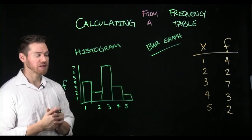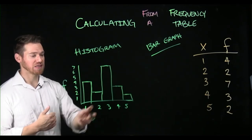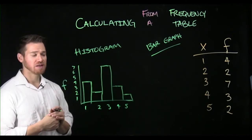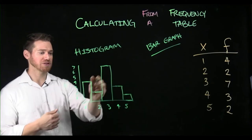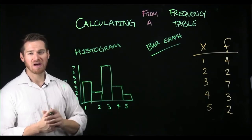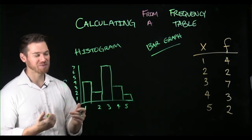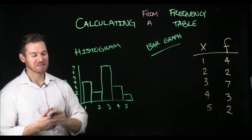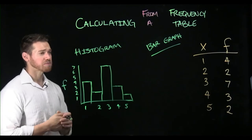For this frequency table, you can quickly see, for example, the mode. This is a unimodal distribution. There may be a minor secondary peak, but really I would say this is a unimodal distribution.